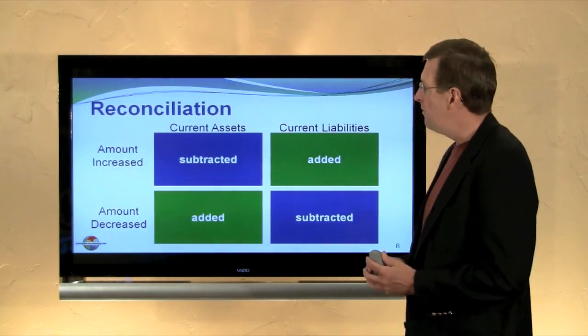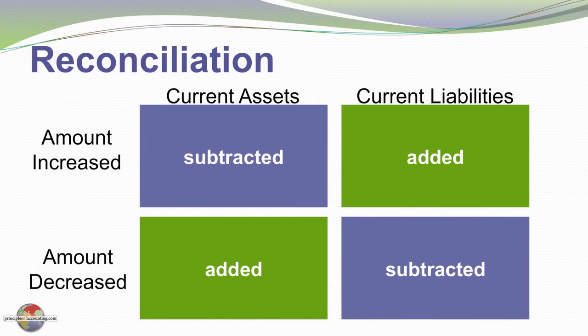This grid might prove helpful in having you think about this. For current assets that increase, we'll generally subtract those — for example, an increase in accounts receivable represents sales we have not collected, so we subtract it in reconciling income to cash from operating activities. Conversely, current assets that decrease we add. On the other side of the balance sheet, current liabilities that increase are added and current liabilities that decrease are subtracted. As you do your homework and examination questions, if you can reconstruct one or two examples and build your grid, it's always a converse effect — whether it's increase or decrease, current asset or current liability. A very helpful little tool to get you through the problems with all the right adds and subtracts.